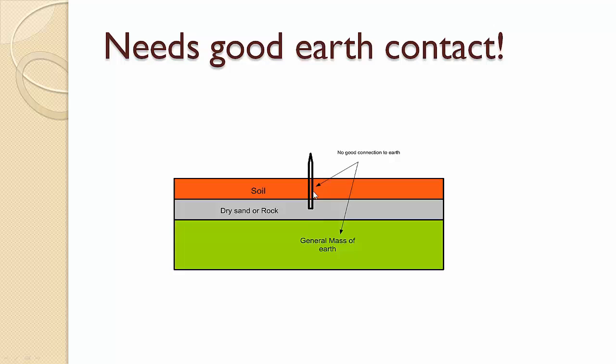which are actually somewhat like an insulator, which prevents the electrode from getting a good contact with the general mass of Earth. So in this case, this is not a good ground. So it will not conduct much current to the Earth.